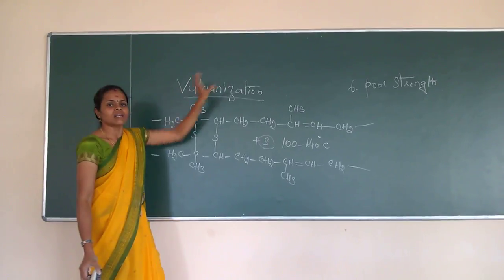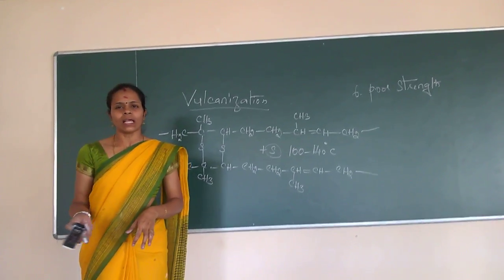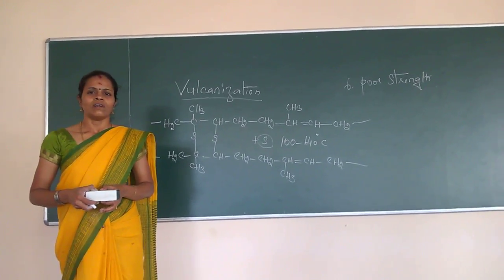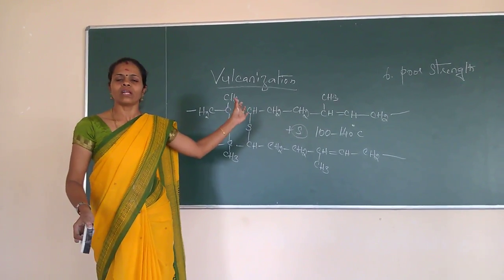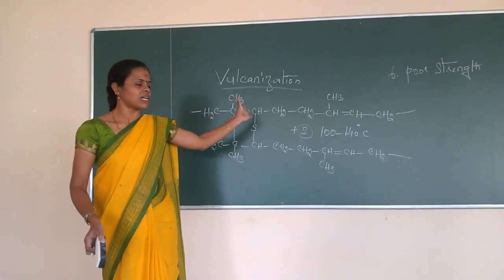So this non-crosslinked structure is getting converted into cross-linked structure. So this is called as vulcanization. Why we are carrying out the vulcanization? To improve the properties of natural rubber that we are carrying out this type of vulcanization.